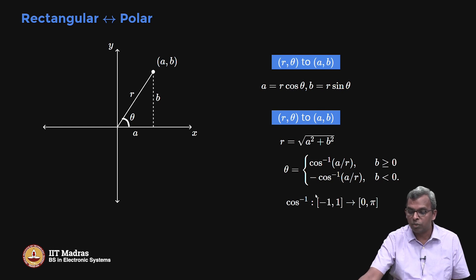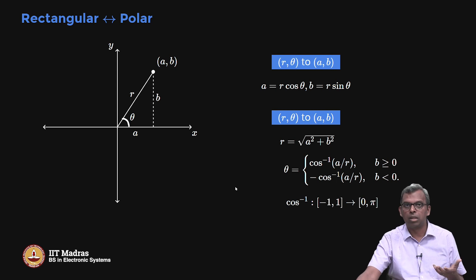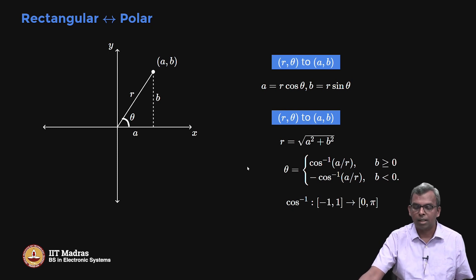That way I keep my cos inverse as being [-1, 1] to [0, π]. And then when I know this b is negative, I adjust my cos inverse with this minus sign so that I get the correct answer. Anyway, cos is even, whether θ is positive or negative you get the same cos, and that positive negativity is decided by the sign of b. I hope you see that.